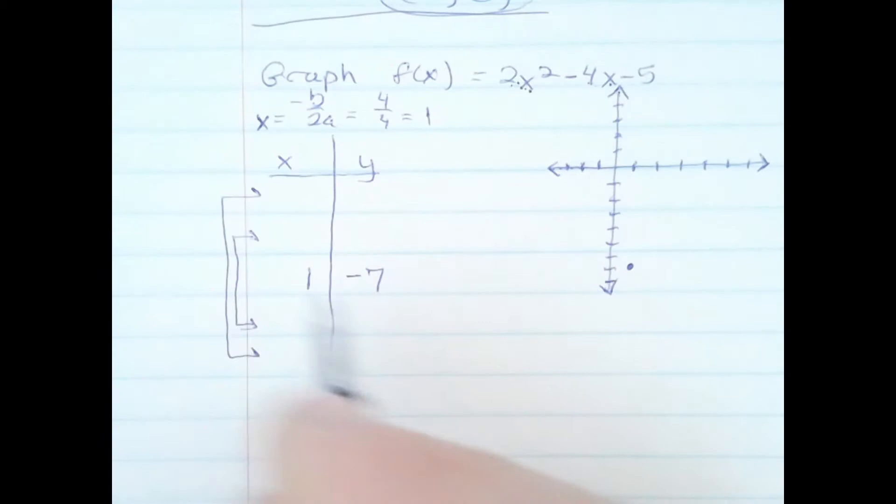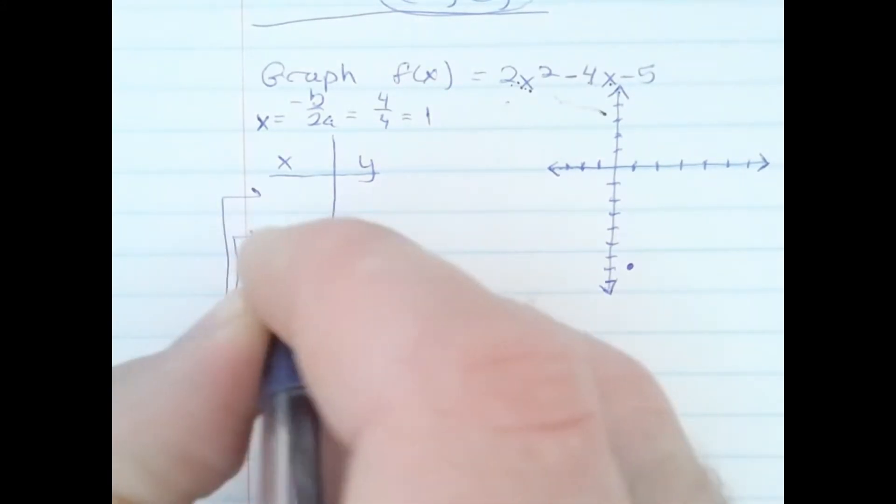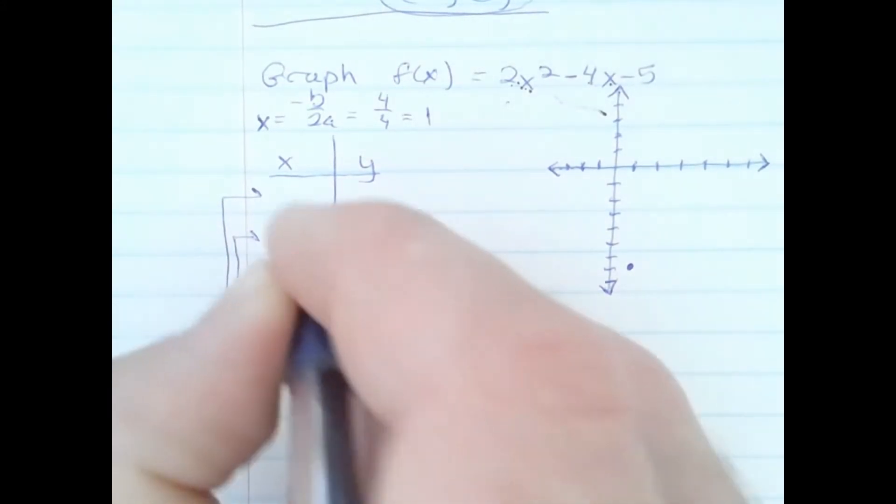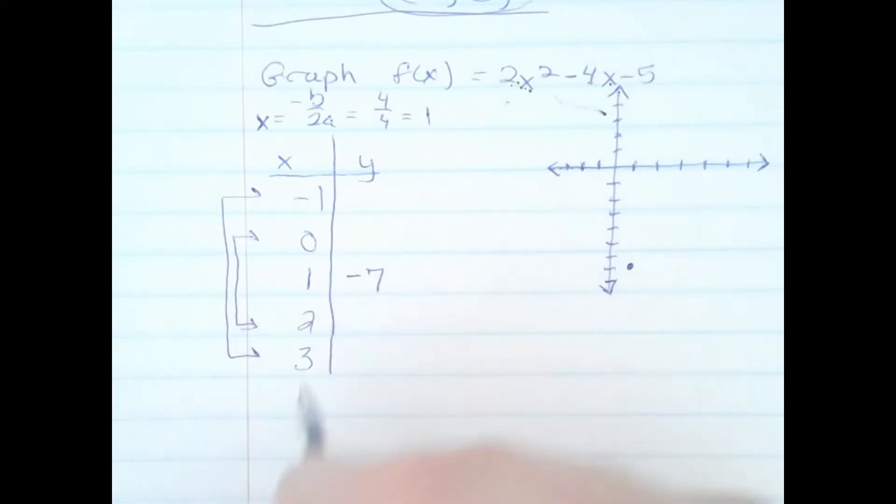I know this opens up based on the positive a value. Now I'm going to choose two values to the right, 2 and 3, and two values to the left of 1, 0 and -1. This helps maintain my symmetry.